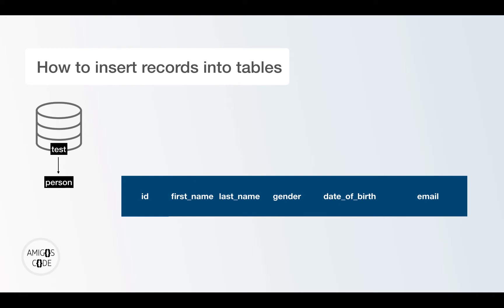So let's say that we want to insert a new person into this table. The person will have the ID of one, first name and last name Smith, gender female, and the following date of birth: the 9th of January of 1980. And this person does not have an email.